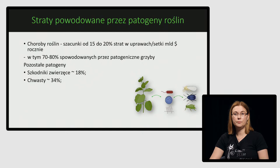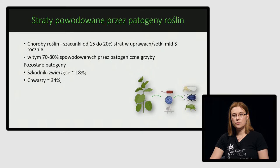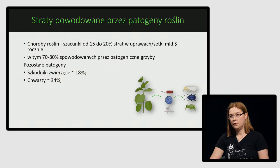Choroby roślin są powodowane przez patogeny roślin. Te patogeny to bakterie, wirusy, viroidy, grzyby, lęgniowce, fitoplazmy oraz nicienie. Powodują straty sięgające od 15 do 20% w skali całego globu, co kosztuje setki miliardów dolarów. W krajach wysoko rozwiniętych straty to rzędu 10%, natomiast kraje gorzej rozwinięte mają straty nawet do 25%. Za większość strat odpowiadają patogeniczne grzyby.